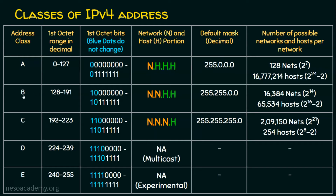In class B, the first 2 bits in the first octet are fixed. The first 2 octets are the network portion, and the last 2 octets are the host portion. So out of 32 bits, the first 16 bits are the network portion. In that 16 bits, the first 2 bits are reserved. So 16 minus 2 is 14, meaning 2 power 14 networks are possible.